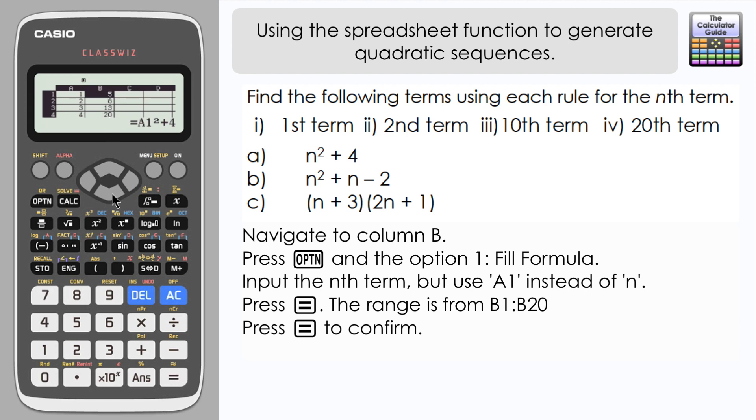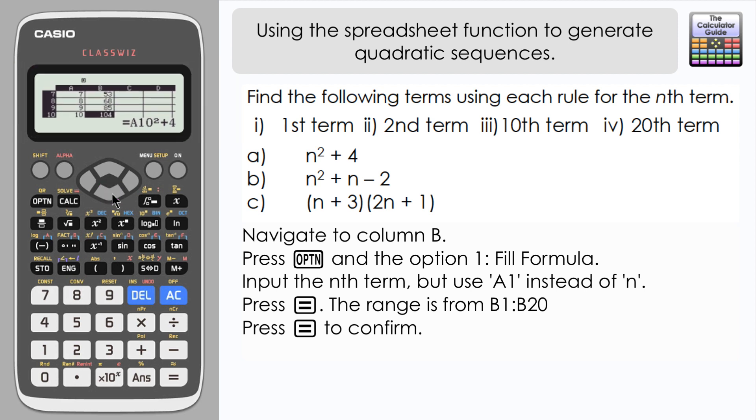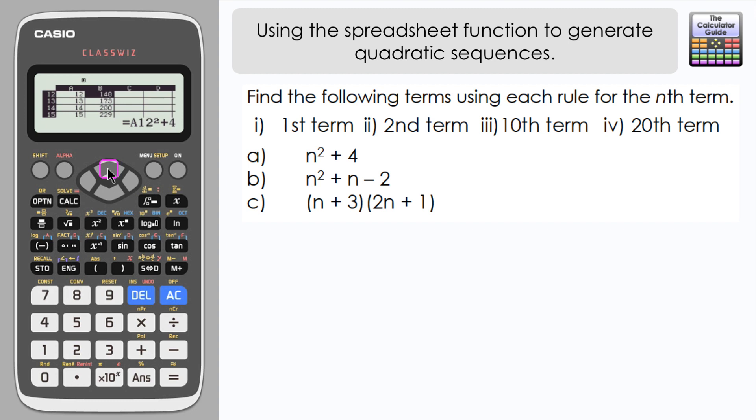And then we can see that it's generated the sequence here. So we can find out the first term of 5, second term of 8, and we can navigate down here. We see all the terms in the sequence n squared plus 4. So the tenth term is 104, and then finally navigate down to the twentieth which is 404.